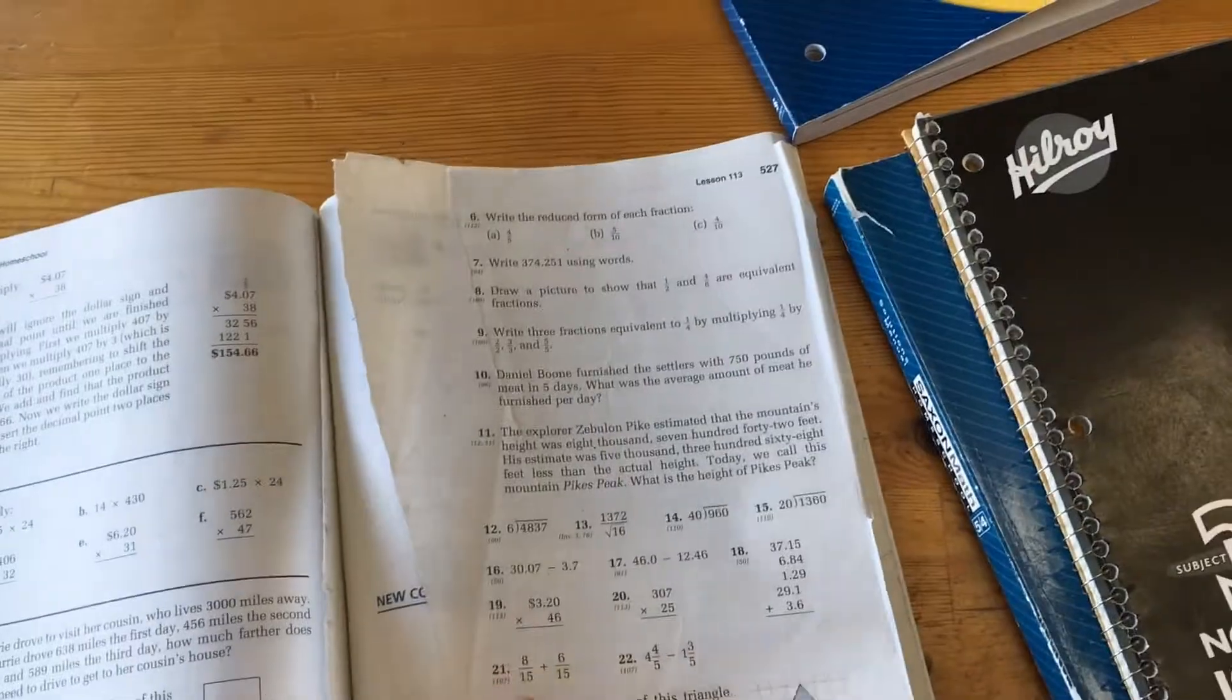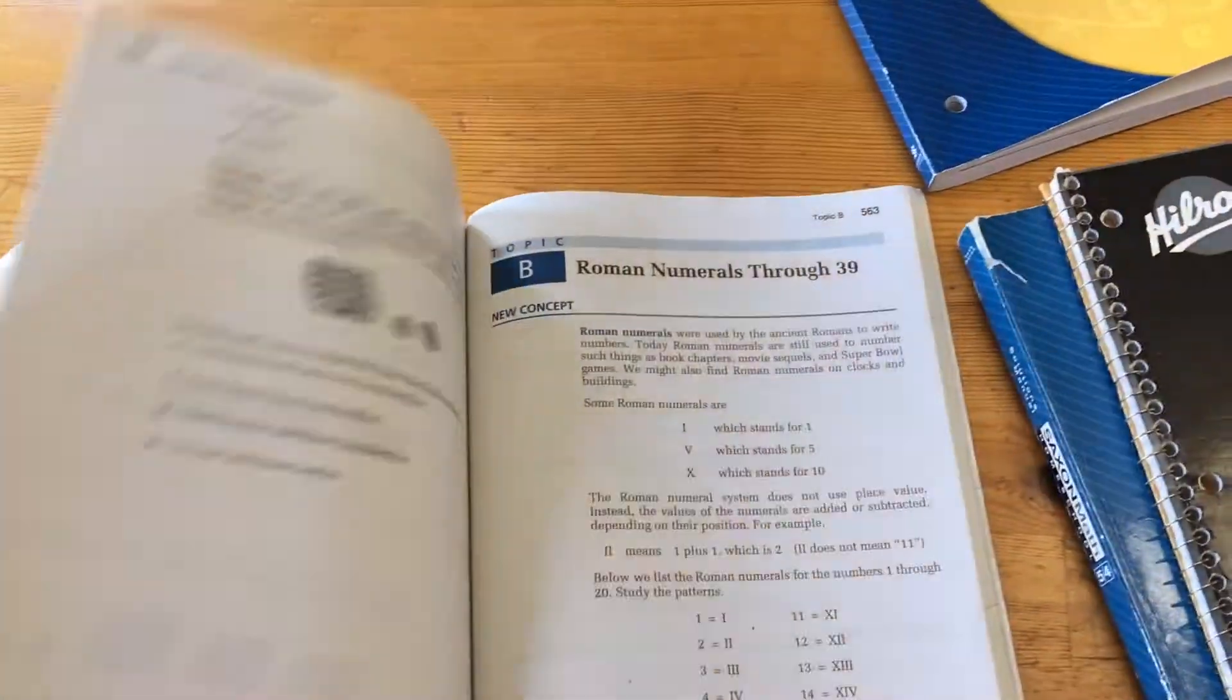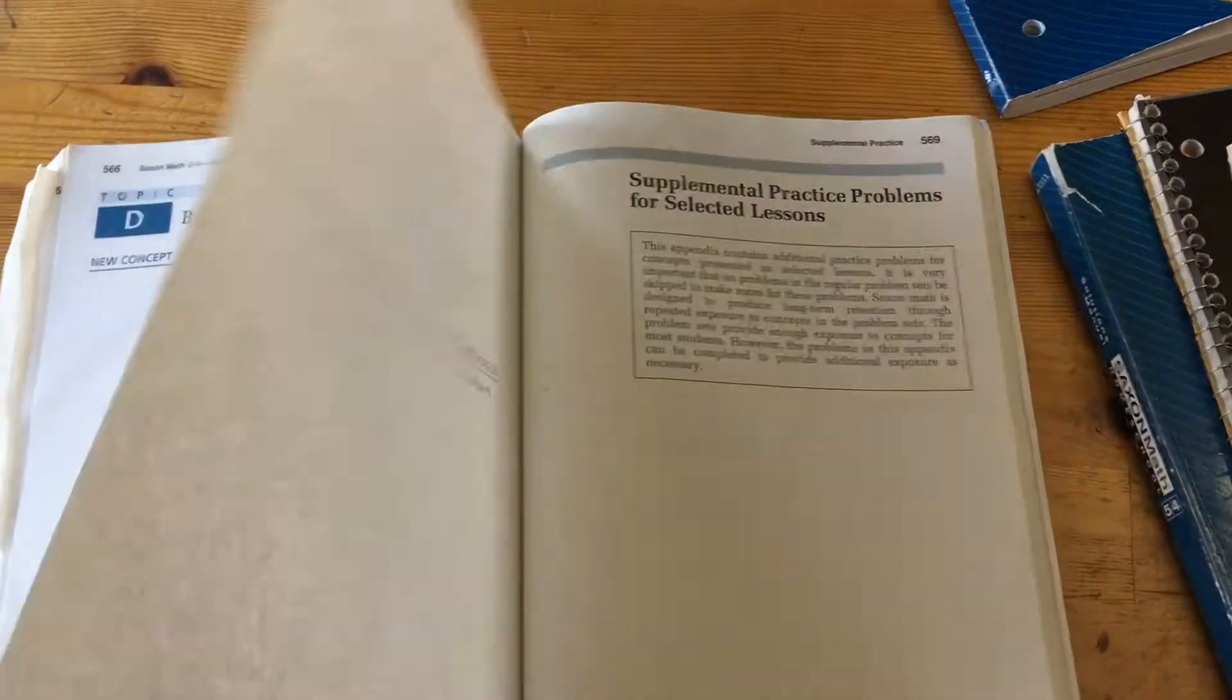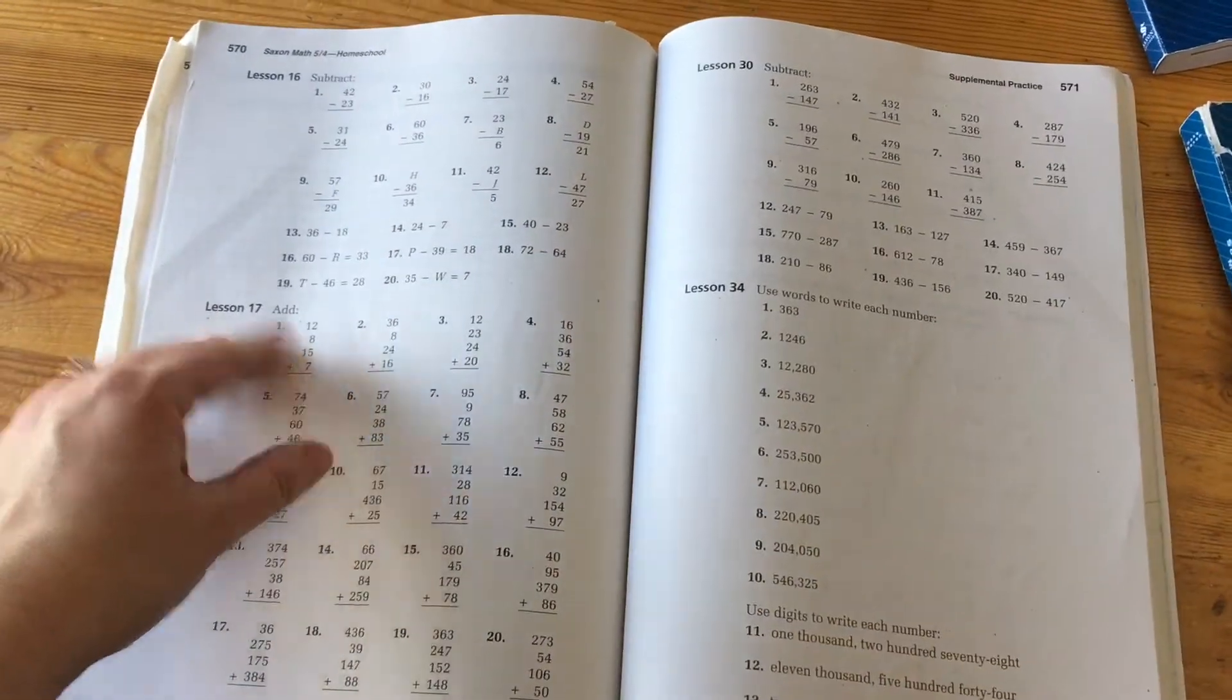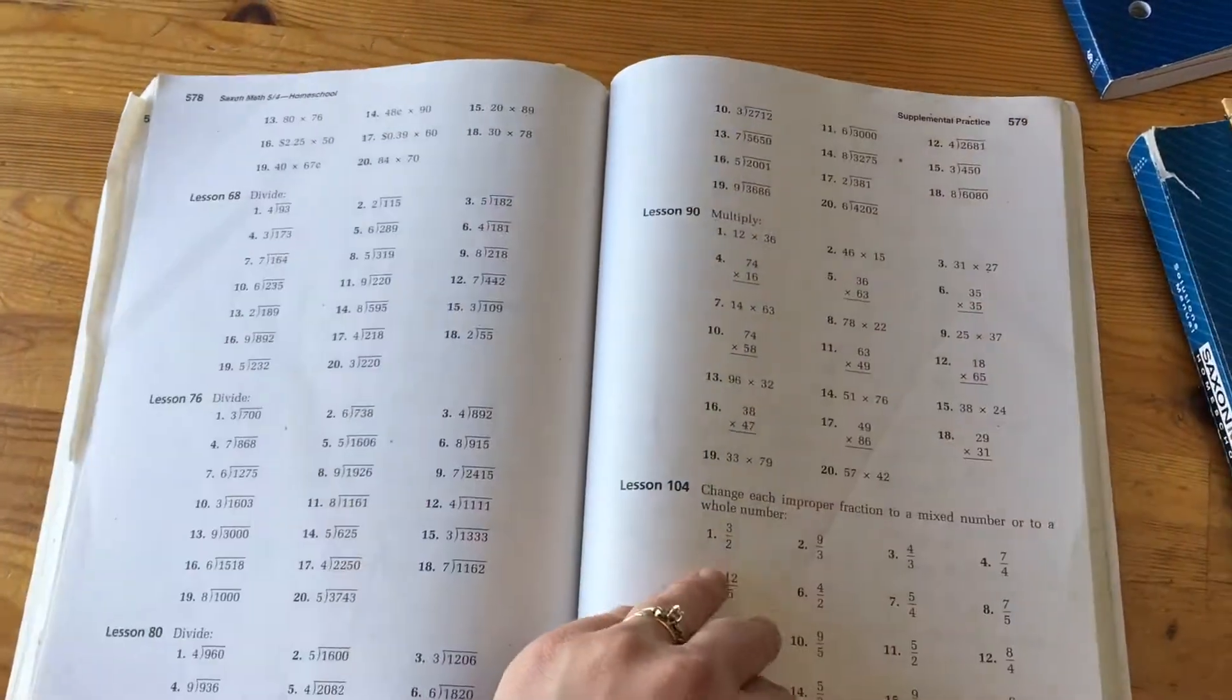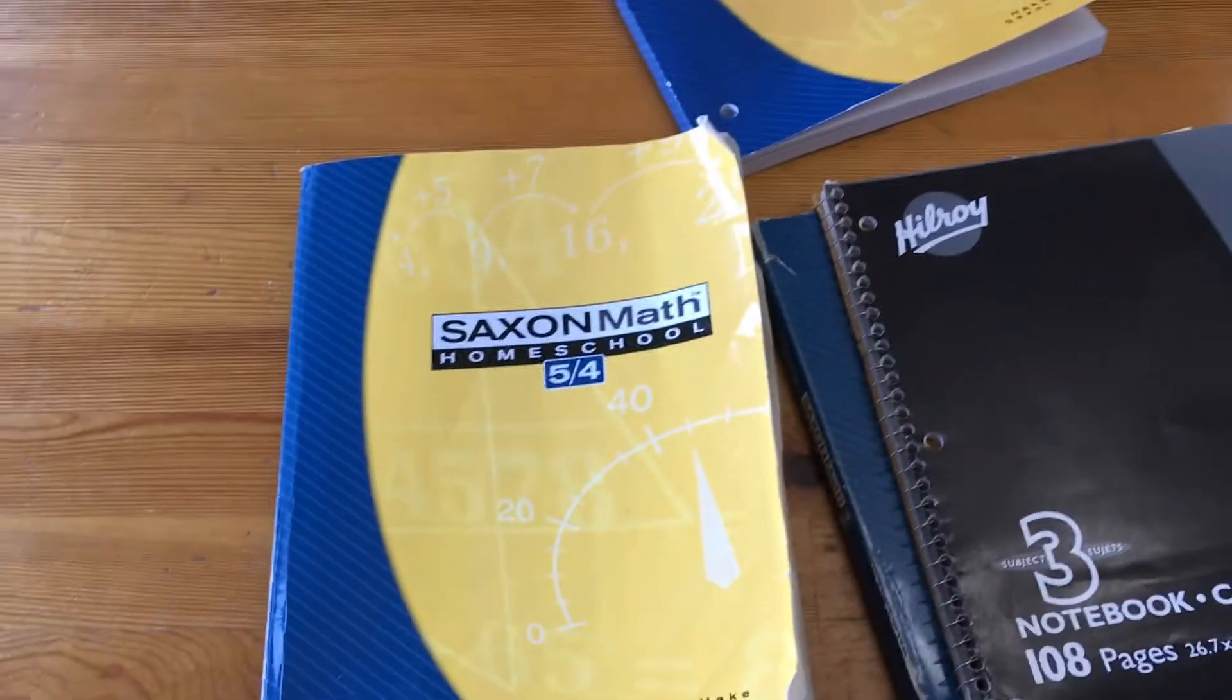I should just show you at the end here. The end of the book here are these topics. So these are like Roman numerals. These are special topics. They're short little sections. And then they have supplementary practice. So if your child's having trouble with a particular lesson, it's not every lesson, but they have a number of them here of extra questions you can give them if they need the help. So that is a look at the 5-4.